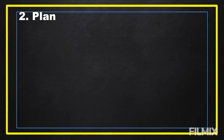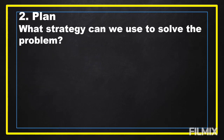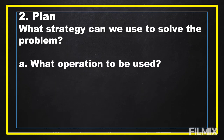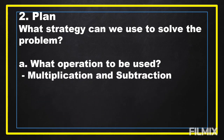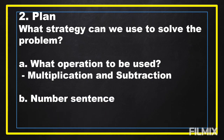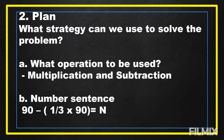After we understand the problem, next we are going to have a plan. What strategy can we use to solve the problem? What operation will be used? In our problem, we are going to use multiplication and subtraction. Next, we are going to write a number sentence: 90 minus (1/3 times 90) is equal to N.